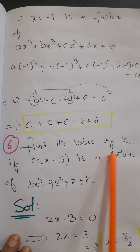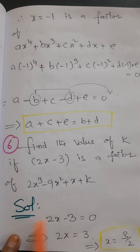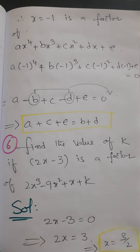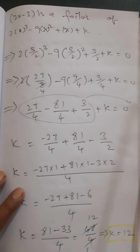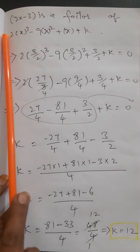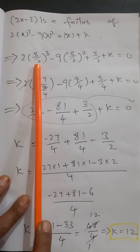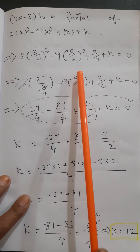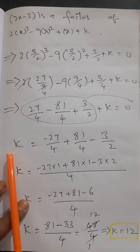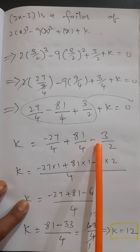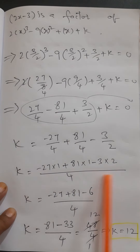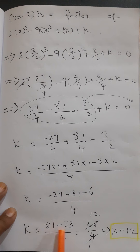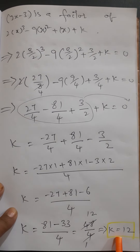Question 6: Find the value of k if 2x - 3 is a factor. Setting 2x - 3 = 0 gives x = 3/2. Substituting x = 3/2 into the function, all terms are rearranged to find k. We get k = -27/4 + 81/4 - 6/4, taking LCM as 4. So k = (-27 + 81 - 6)/4 = 48/4. Therefore k = 12.